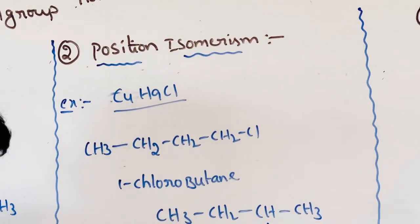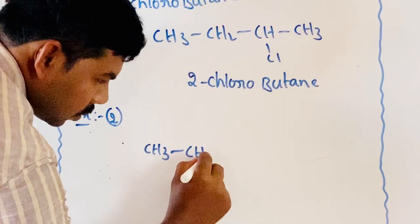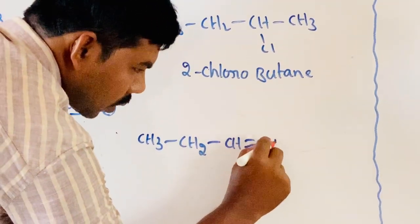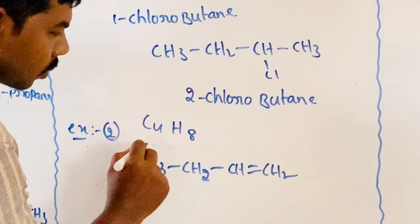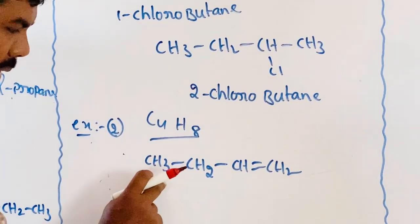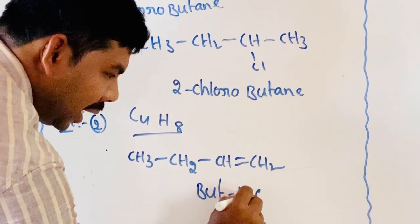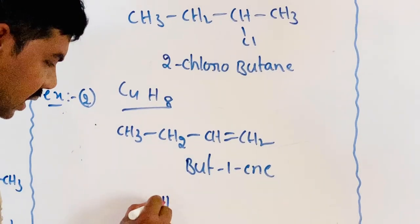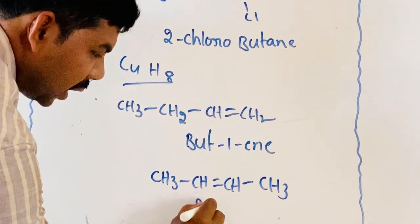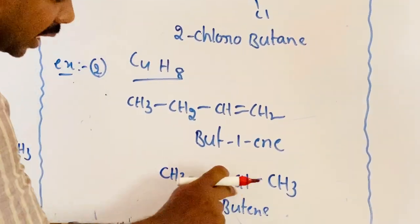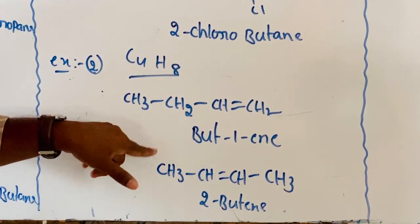Another example: C4H8. First structure: CH3-CH2-CH=CH2, with 4 carbons and a double bond on the first carbon — this is 1-butene. Second structure: CH3-CH=CH-CH3, the double bond is on the second carbon — this is 2-butene. Same molecular formula but different position of the multiple bond — this is position isomerism.